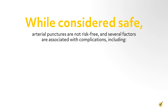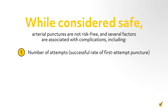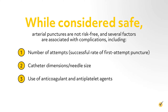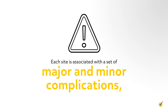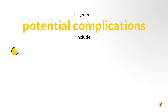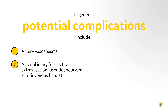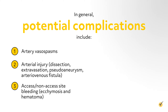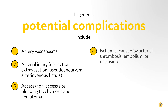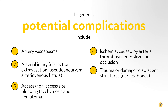While considered safe, arterial punctures are not risk-free, and several factors are associated with complications including number of attempts, successful rate of first attempt puncture, catheter dimensions, needle size, use of anticoagulant and antiplatelet agents, and experience of the practitioner. Each site is associated with a set of major and minor complications which can occur during or after the procedure. Potential complications include artery vasospasms, arterial injury, dissection, extravasation, pseudoaneurysm, arteriovenous fistula, access or non-access site bleeding, ecchymosis and hematoma, ischemia caused by arterial thrombosis, embolism or occlusion, trauma or damage to adjacent structures like nerves and bones, and infection.